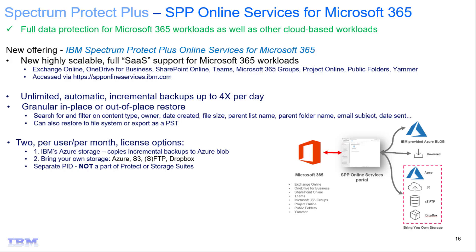This SaaS offering, Software as a Service, is licensed in two ways. The first way is you utilize the IBM Azure storage and do the backups out to that Azure blob. Or you can license it to bring your own storage and then use your own Azure storage licensing, S3, SFFT, or Dropbox. This is a per user per month license, and it is a separate PID — it's not part of our Protector storage suites.